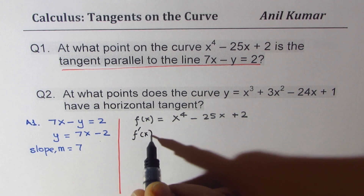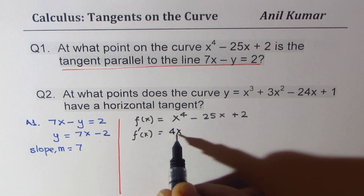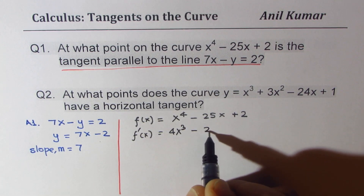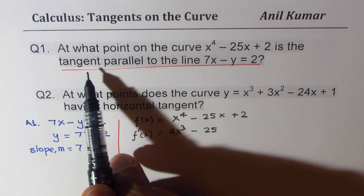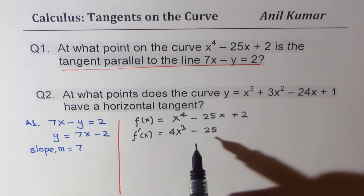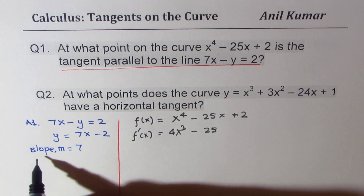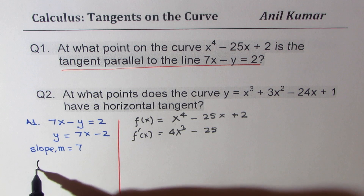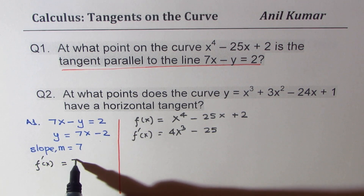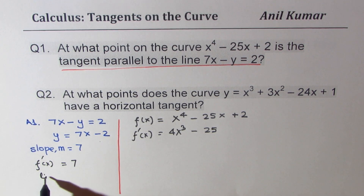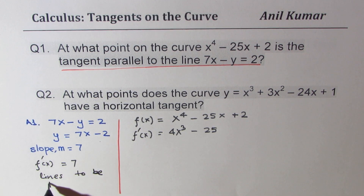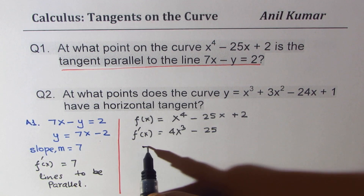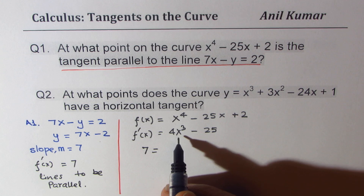The derivative of this function will be 4x cubed minus 25. Now when we say parallel, it means same slope. So we are looking for f prime of x equals to 7 for lines to be parallel.